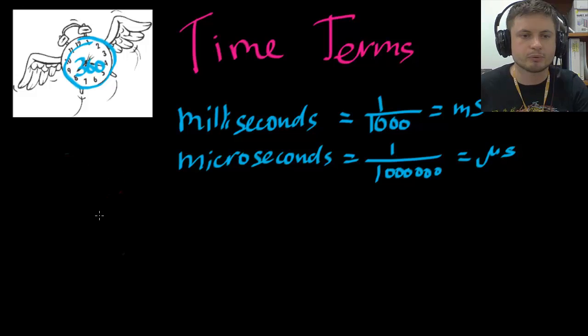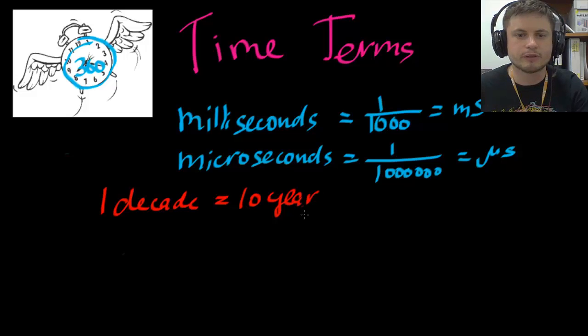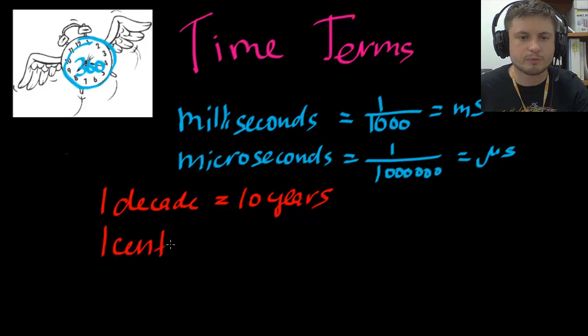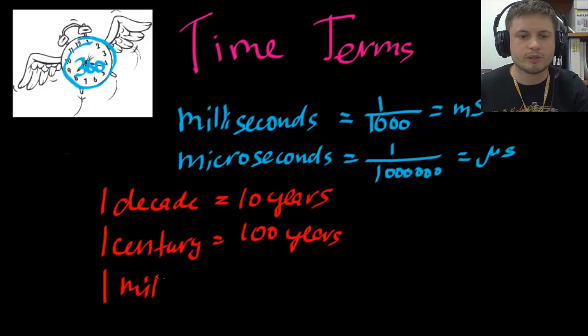We also have other bigger units. We have one decade which represents 10 years, at least in math, although sometimes you hear that it's 12 years but in math it's 10 years. We then have a century which represents 100 years and millennium which represents a thousand years. Millennium, I think I misspelled it but that's okay. It's not an English class.